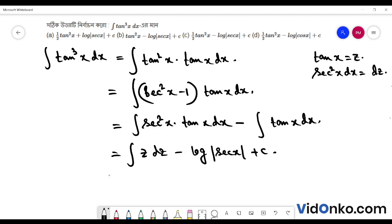Now, continuing with the calculation, we get tan squared x by 2 minus the integral of tan x dx, which equals tan squared x by 2 minus log mod sec x plus c.